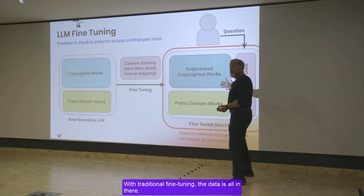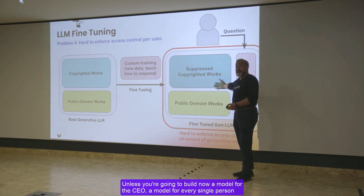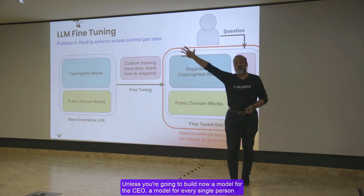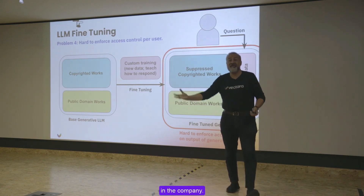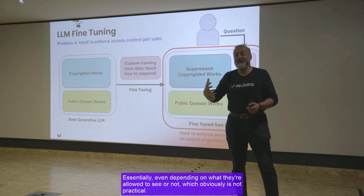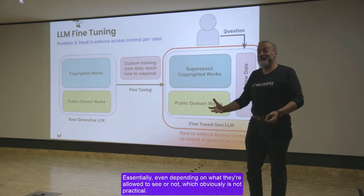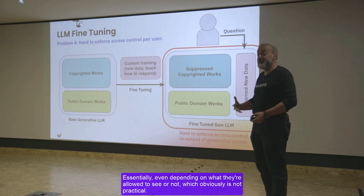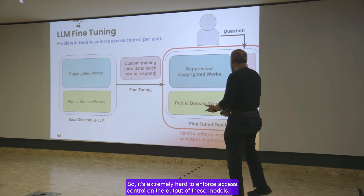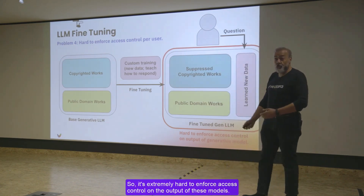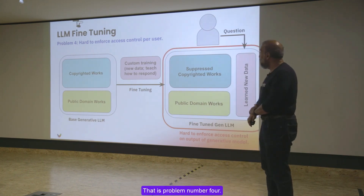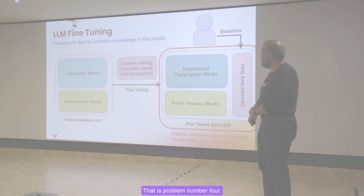With traditional fine-tuning, the data is already in there, unless you're going to build a model for the CEO, a model for every single person in the company depending on what they're allowed to see or not, which obviously is not practical. So it's extremely hard to enforce access control on the output of these models. That is problem number four.